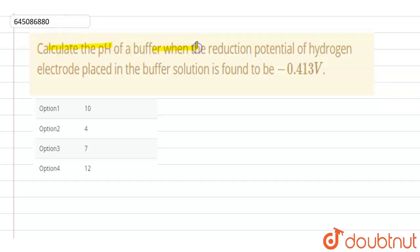Calculate the pH of the buffer when the reduction potential of hydrogen electrode placed in the buffer solution is found to be minus 0.413V. Now what is buffer solution?